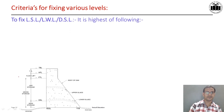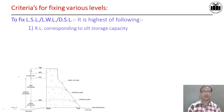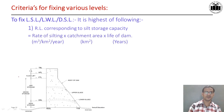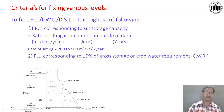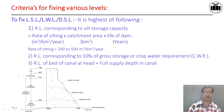Now let us see the criteria for fixing the various levels. To fix LSL, LWL, or DSL, it should be the highest of the following criteria. First: reduced level corresponding to silt storage capacity, given as rate of silting × catchment area × life of dam. Generally the rate of silting is taken as 200 to 500 m³ per km² per year. Second: reduced level corresponding to 10% of gross storage or crop water requirement. Third: reduced level of bed of canal at head plus full supply depth in canal. Among these three criteria, you have to choose the highest one.